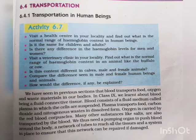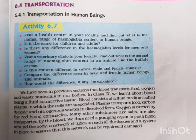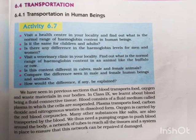We need a pumping organ so that blood can circulate throughout our body. We also need a network of tubes to reach all the tissues, and a repair system to ensure that this structure can be repaired if damaged. Our circulatory system should be able to work well.